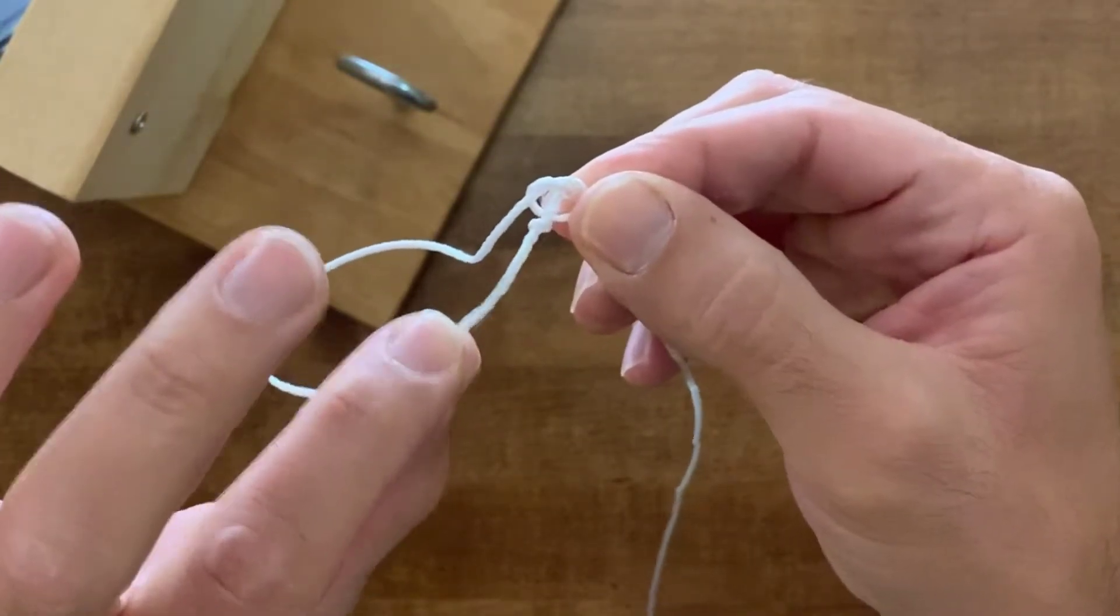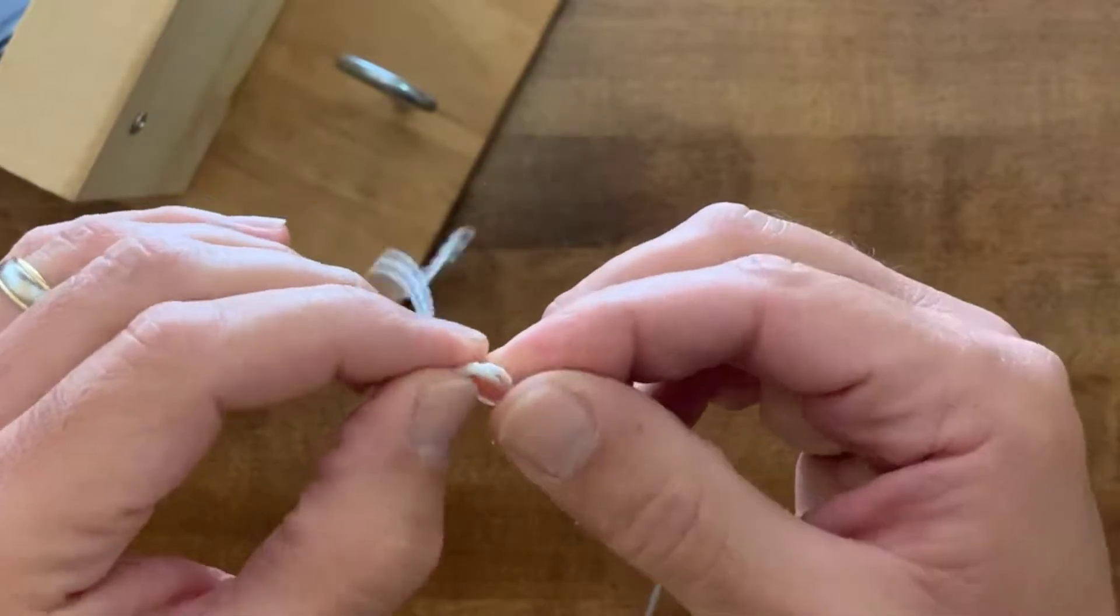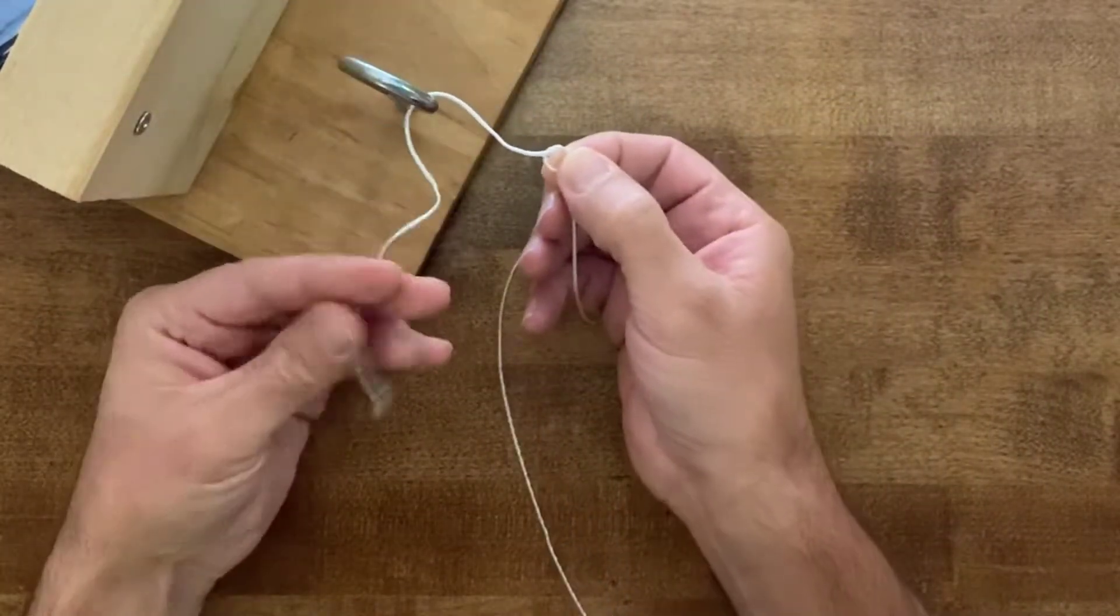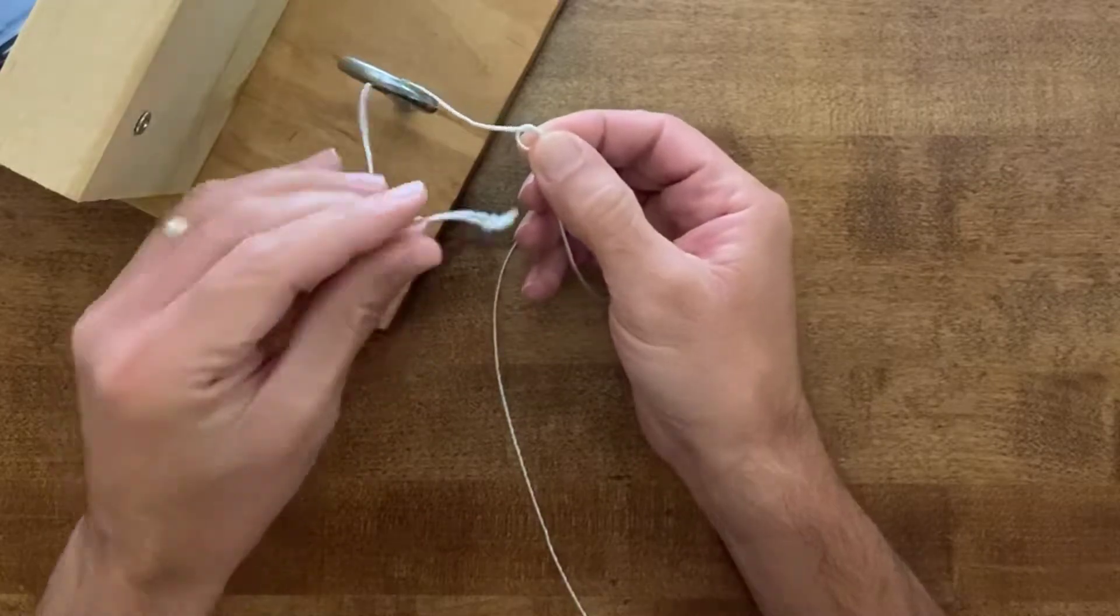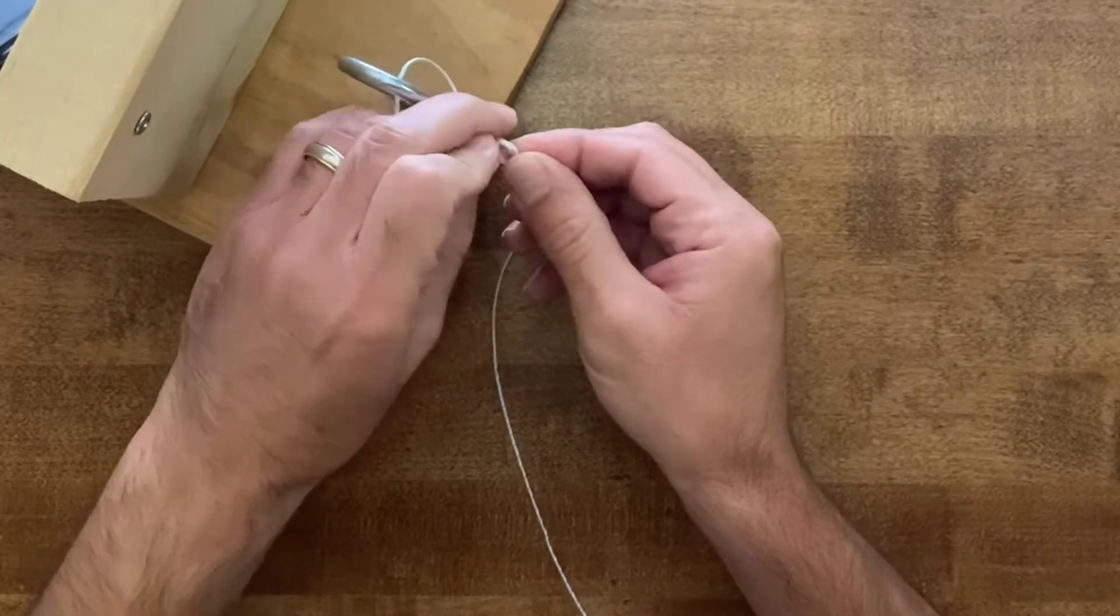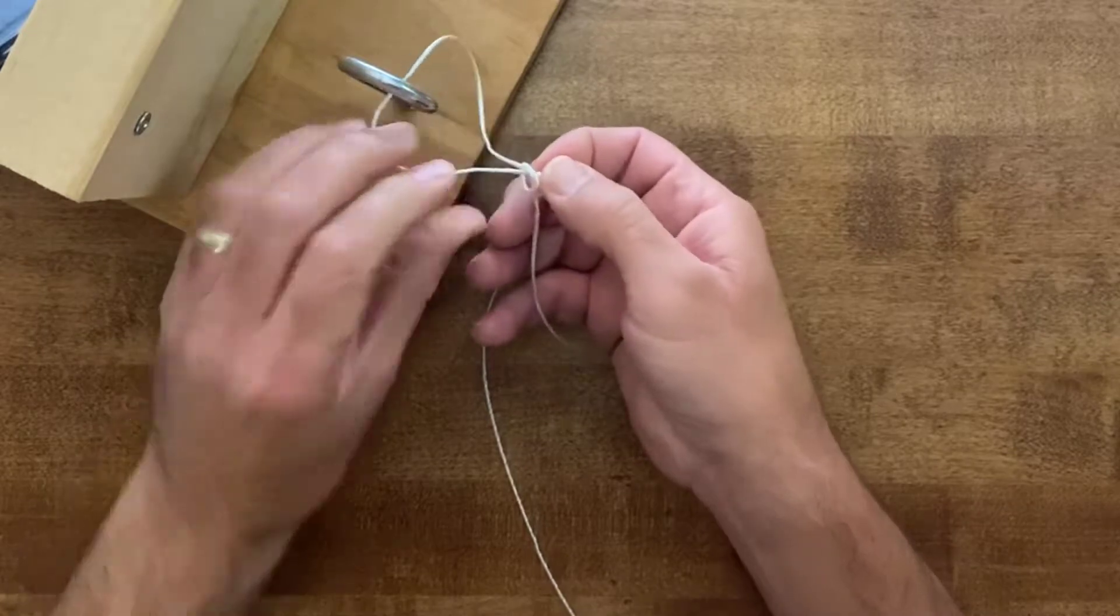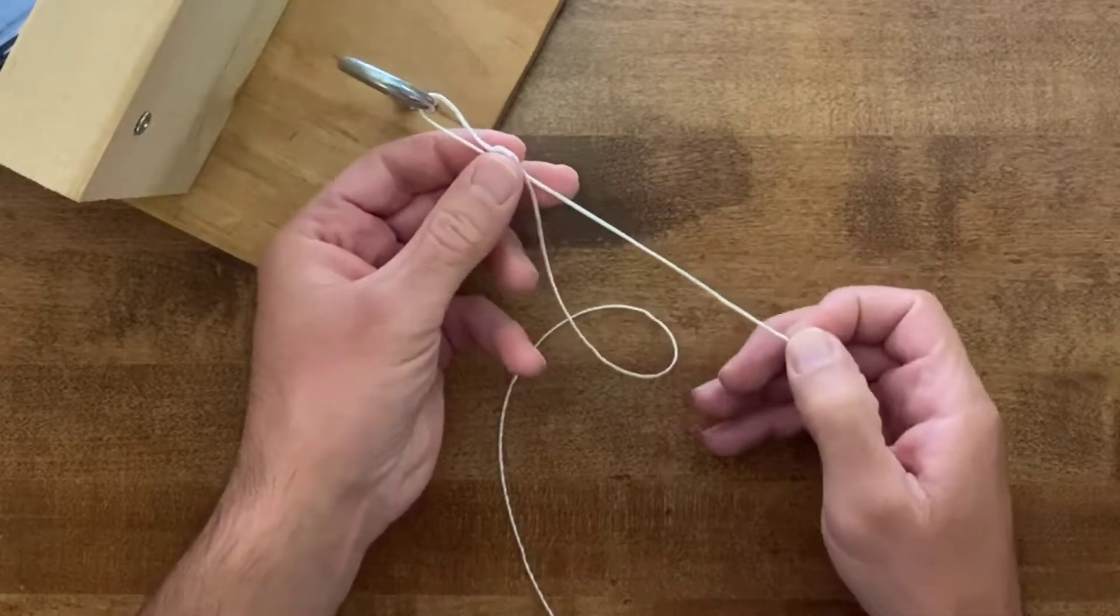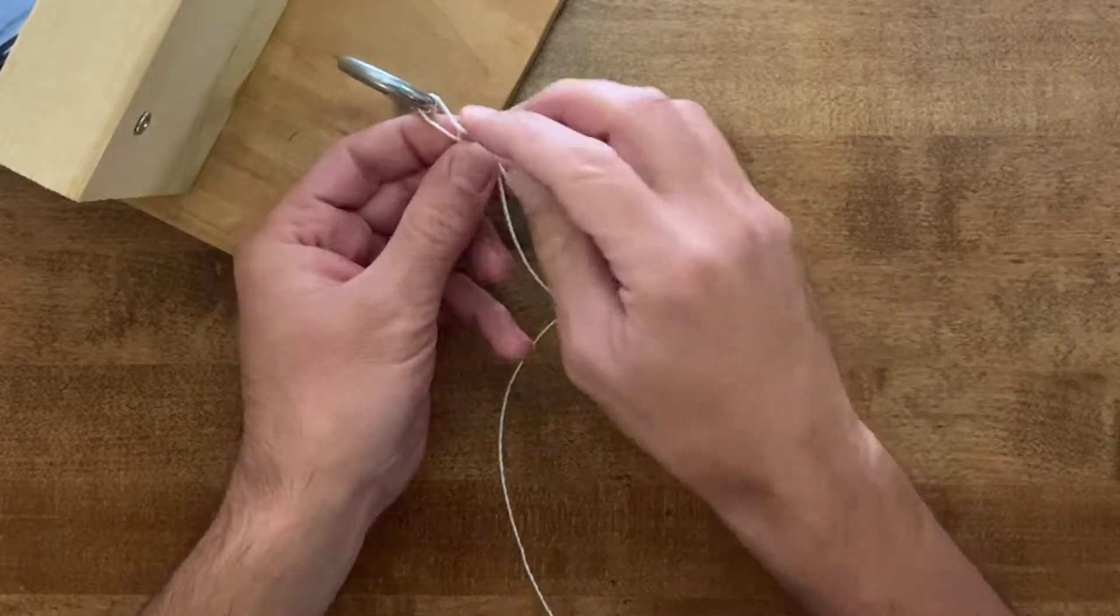As we put this line through the eye of our lure, we're going to go right back through that overhand knot from the same side that it came out of. Go right back through from the same side it came out of. Pull it down - that'll be the size of our loop right there.